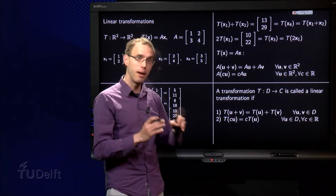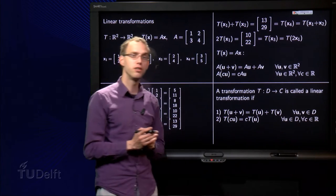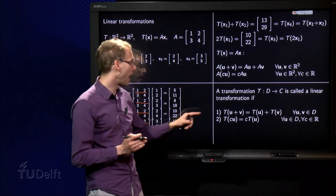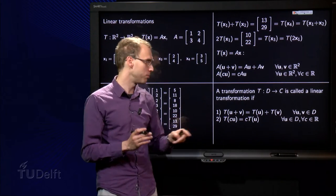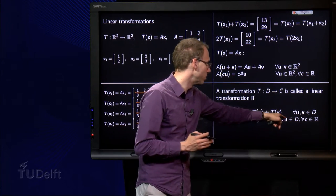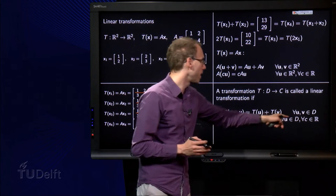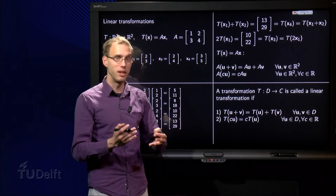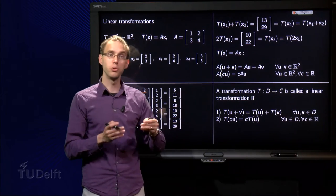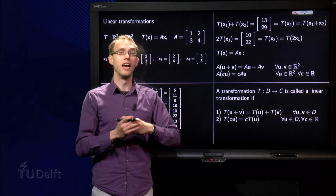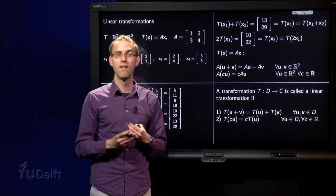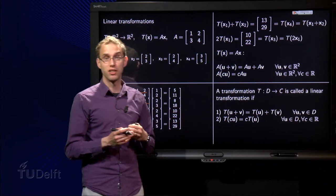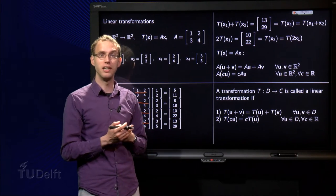So if the image of u plus v is the image of u plus the image of v for all vectors in the domain. And if the image of c times u is the same as c times the image of u for all vectors in the domain and scalar c. So matrix transformation always satisfies these rules. So a matrix transformation is always a linear transformation. So in our course we will only encounter matrix transformations so we will only encounter linear transformations.